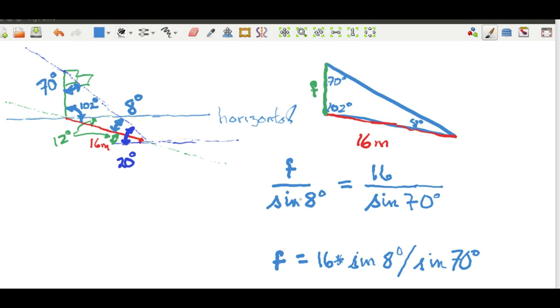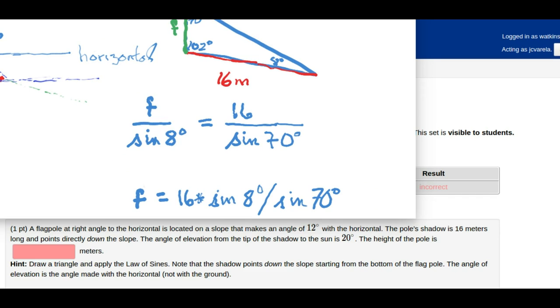So multiplying both sides by the sine of 8 degrees, I get F is equal to 16 times the sine of 8 degrees divided by the sine of 70 degrees. So I'd like to enter that result into the WebWork problem. So I put 16 times the sine of 8 divided by the sine of 70.